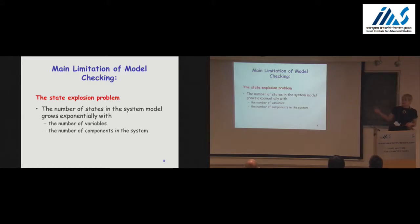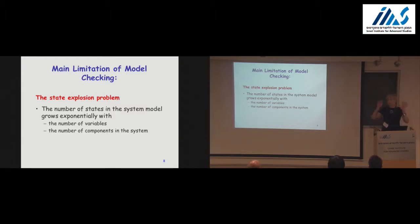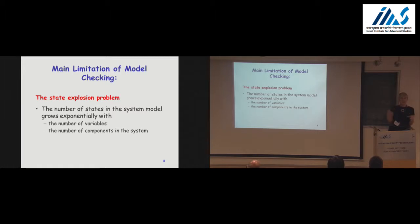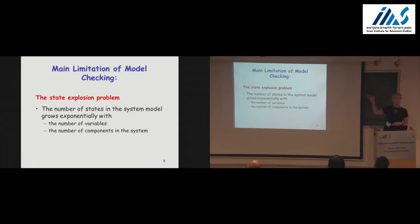Model checking looks great and very simple. The problem is that usually systems have many states. If we have n binary variables, then the number of states is 2^n. And if we have several processes, then the number of states is the multiplication of the sizes of their states. So very quickly, this number grows very fast, and looking at it as a simple graph will not be efficient — it will not be scalable.